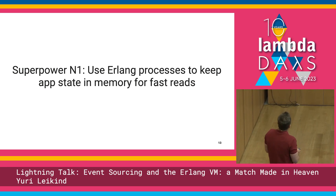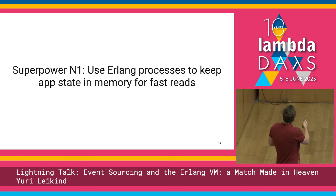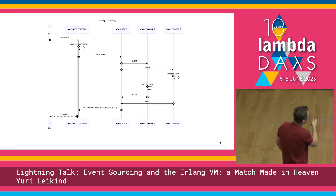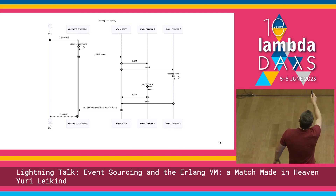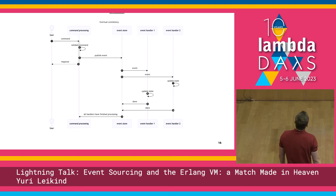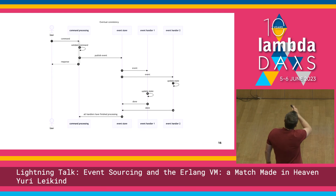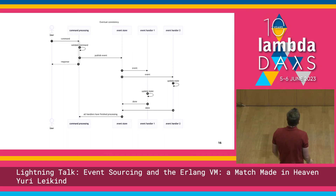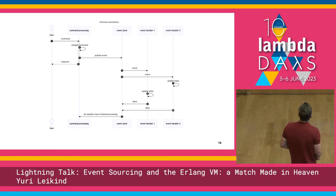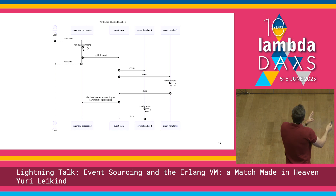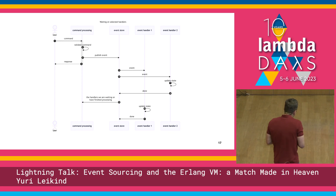So that was the first superpower: we use Erlang processes to keep application state in memory for fast reads. Now, superpower two: eventual consistency when dispatching an event. Here is an example of how we could process an incoming command. You see there is a command, two handlers, and we send the response only after both handlers are done updating the state — that's fine. But we can also send the response after publishing events, before those handlers have processed the event. Why? Because publishing an event is a promise that the state will be updated. Or we can go somewhere in between and wait for a subset of those subscribers — for example, waiting for event handler two, and as soon as it is done processing the state, we send the response. This is also a way to optimize writing.